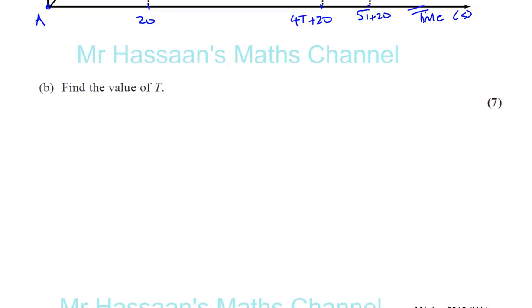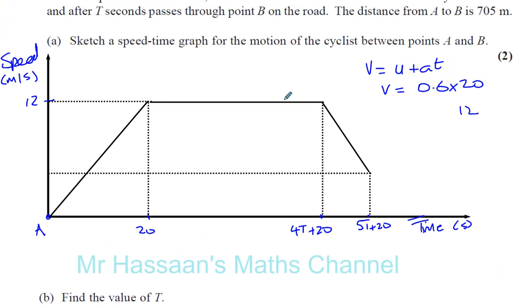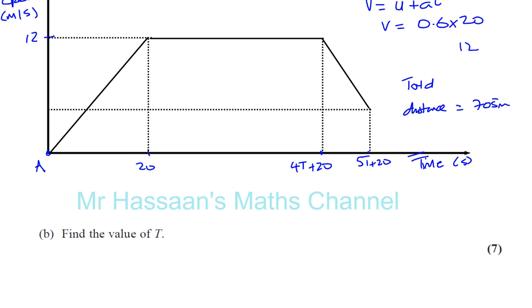Part B says find the value of T. The total distance is equal to 705 meters, meaning the total area under the speed-time graph is 705. We can split this into shapes. I'll use two trapeziums — one big trapezium from the start up to 20 plus 4T seconds, and a smaller trapezium on its side for the deceleration phase. I like to use trapeziums because you don't have to break it down into as many separate objects.